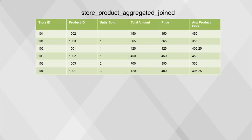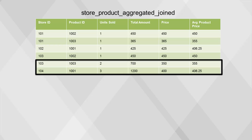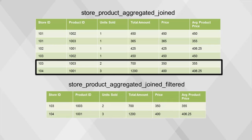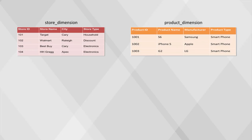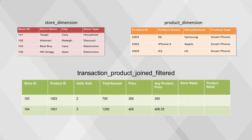This results in a table with a similar structure as the store product aggregate table, with the only difference being the new column, average product price. We filter the resulting table to only include rows where price is less than average product price — there are only two rows where this is true. Finally, we join this table with the store dimension and product dimension tables, adding store name and product name to the table. The resulting table makes it clear that the G2 went on sale at Best Buy and the S6 went on sale at HH Gregg.